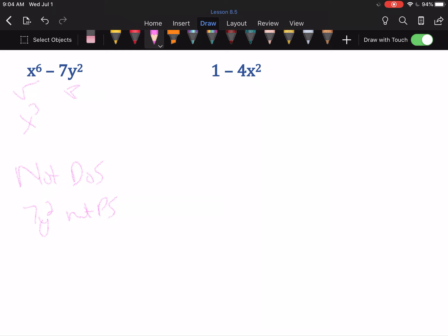Last example. Square root of 1 is 1. Square root of 4x² is 2x, so we're in business. (1 + 2x)(1 - 2x).